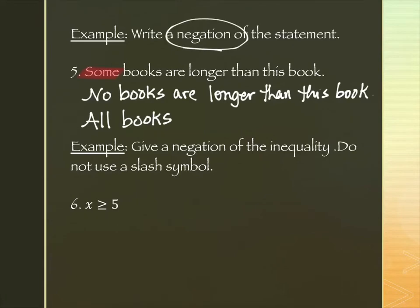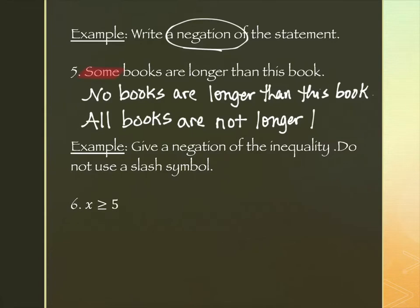We're creating the negation — the logical opposite — not rewriting it into an equivalent statement. So "no books are longer than this book" is the negation. How could I rewrite using "all books"? I can't just say "all books are longer than this book" — that's not a negation, it's a stronger statement. I'd need to say "all books are not longer than this book" — it technically meets the criteria, but that's not how we usually think about English. "All books are not" feels weird.